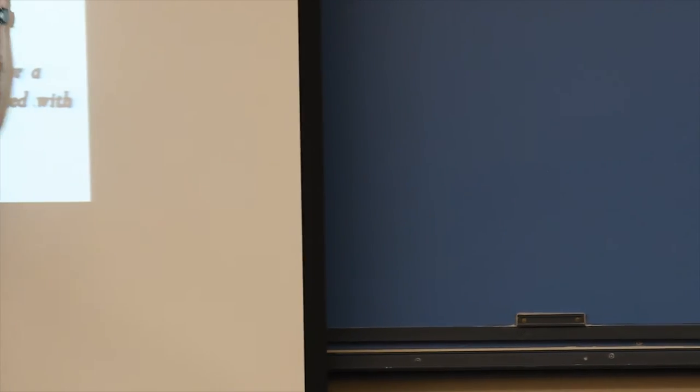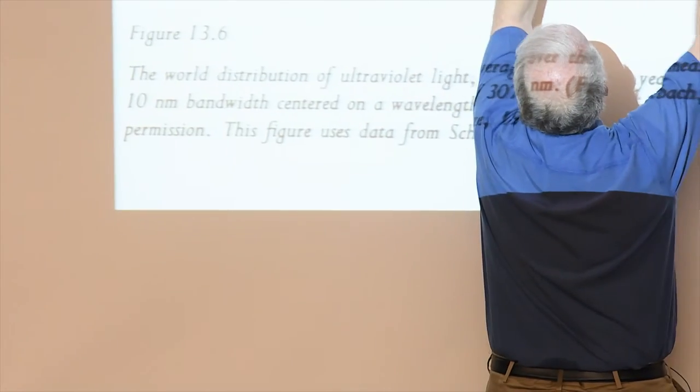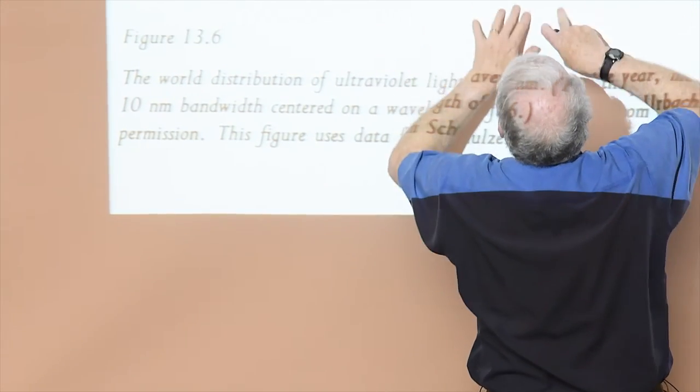If you look at the world, where do you find ultraviolet? This shows ultraviolet radiation on earth. You can see it's high on the equator and falls off quickly.